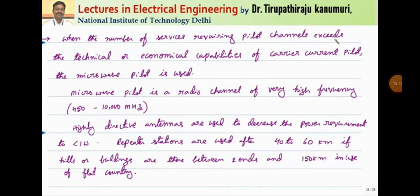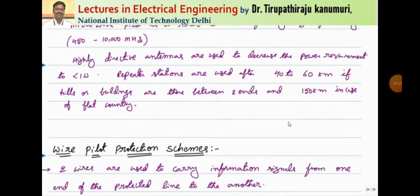When the number of services requiring the pilot channel exceeds the technical or economical capabilities of the carrier current pilot scheme — when more channels are required or more information should be transmitted — we go for microwave pilot protection. This microwave pilot protection is a radio channel of very high frequency in the order of 450 to 10,000 MHz. High directive antennas are used to decrease the power requirement, generally less than 1 watt. Where no barriers exist, we can transmit signals up to 150 kilometers without any problem. But if hills or buildings are present, microwaves get distorted, and repeater stations must be installed after every 40 to 60 kilometers depending on the attenuation.